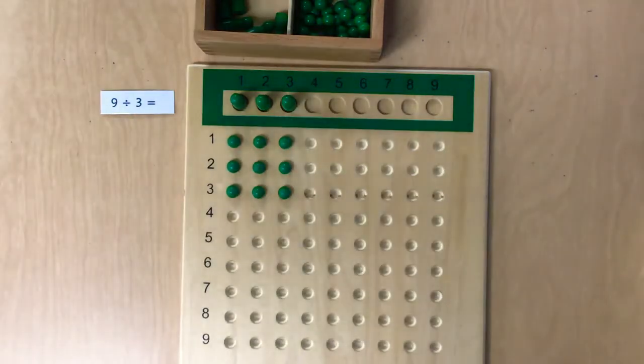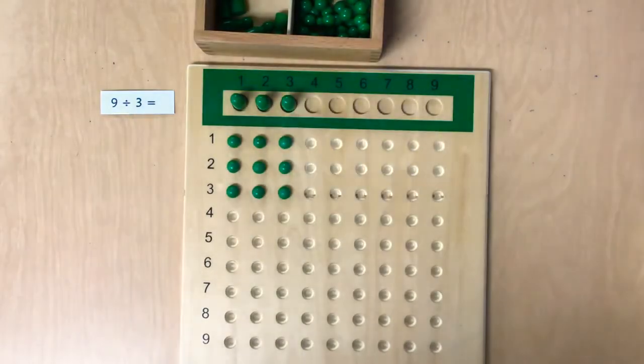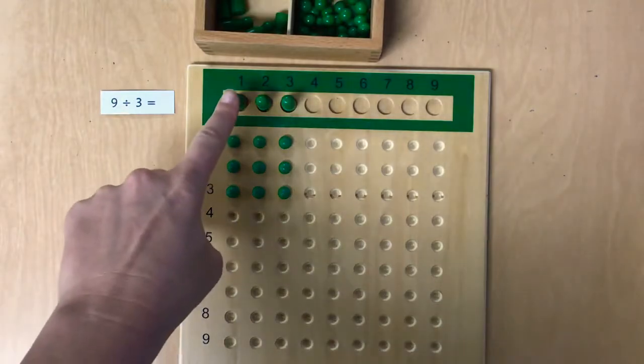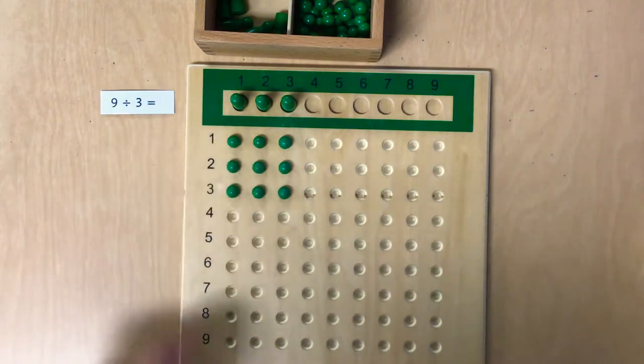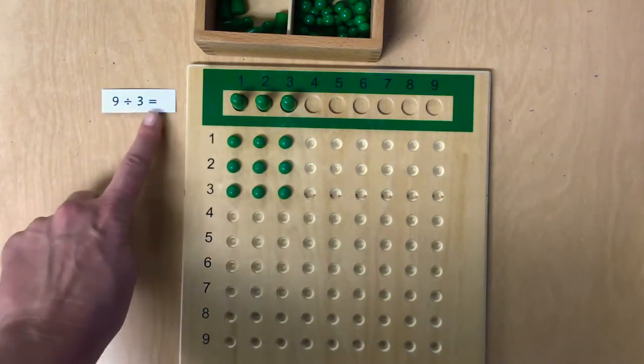So, do you remember how to find the answer to the division problem? Yeah, how much does this first Skittle have? And it has 1, 2, 3. So 9 divided by 3 equals 3.